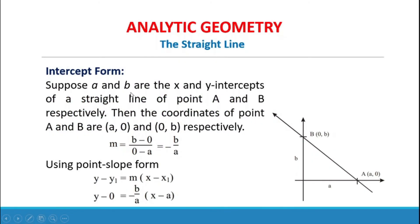Intercept Form. Suppose A and B are the x-intercept and y-intercept of a straight line at points A and B respectively. Then the coordinates of point A are (A, 0) and point B are (0, B) respectively.